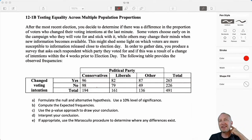So let's get into this. After the most recent election, you decide to determine if there is a difference in the proportion of voters who changed their voting intentions at the last minute. Some voters choose early on in the campaign who they will vote for and they stick with it. Others might change their mind as new information becomes available. This might shed some light on which voters are more susceptible to information that is released close to election day because they might be more likely to change their minds.